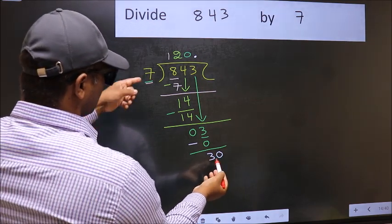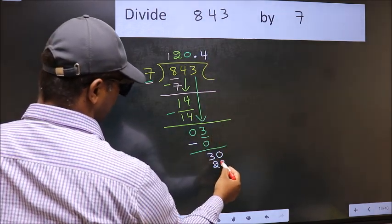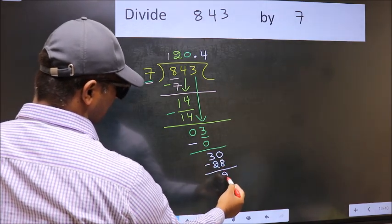A number close to 30 in 7 table is 7 fours 28. Now you should subtract. 30 minus 28, 2.